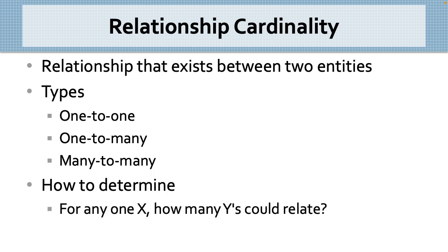Here is how to determine the relationship cardinality between entities X and Y. Ask yourself, for any one X, how many Y's could relate? One or many? For example, for any one record in the student table, how many records in the family table could relate? Only one. Now, ask the question from the other side of the relationship. For any one record in the family table, how many records in the student table could relate? One or many? The answer is many, because one family may enroll many of their children in our school. So, there is a one-to-many relationship between student and family.